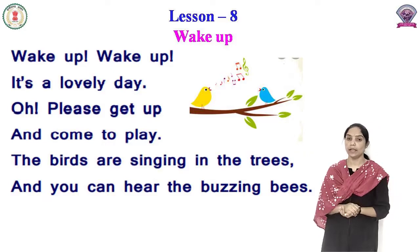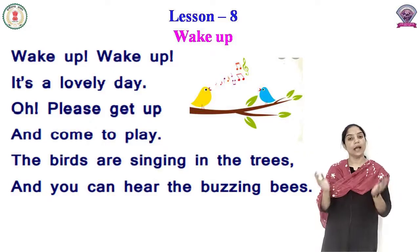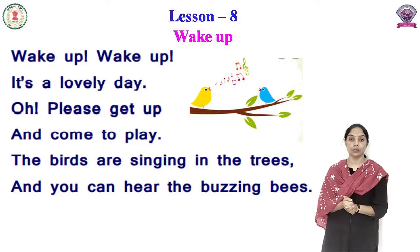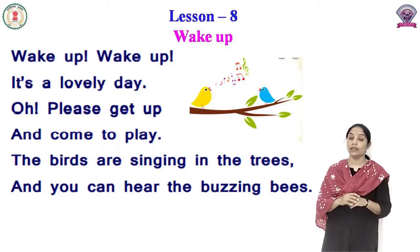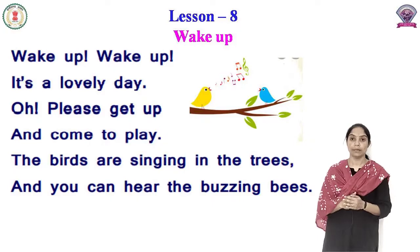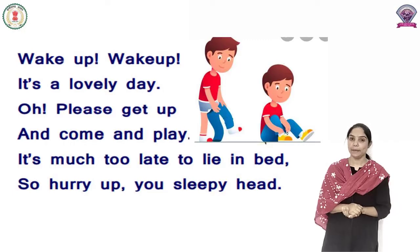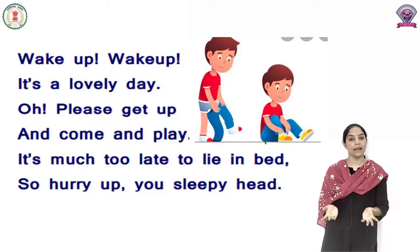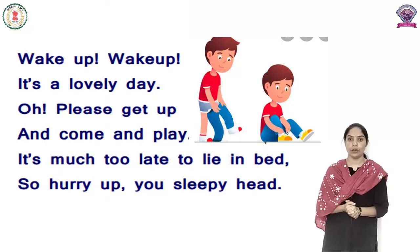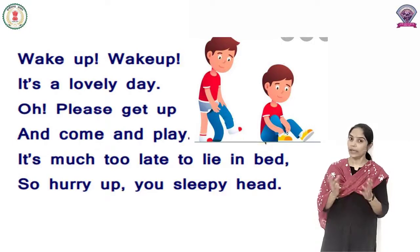इन lines का क्या मीनिंग है? पक्षी पेड़ पर गा रहे हैं। और तुम मधुमक्खियों की भिनभिनाहट भी सुन सकते हो। जैसा कि मधुमक्खियां जब उड़ती हैं उस आवाज को कहते हैं buzzing, मतलब भिनभिनाहट। ठीक है? Poet next line में क्या कह रहा है? जागो, जागो — यह एक प्यारा दिन है। Oh please get up — उठ जाओ, and come and play — और बाहर आओ और खेलो।